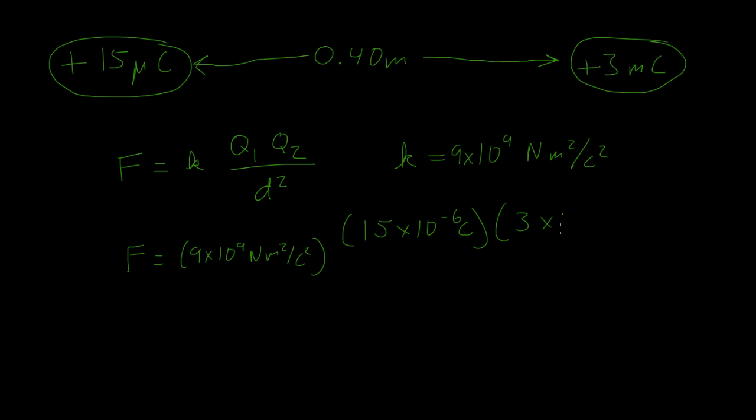Times 3 times 10 to the negative third coulombs, that's the second charge, q2, divided by the distance between them, 0.40 meters squared.